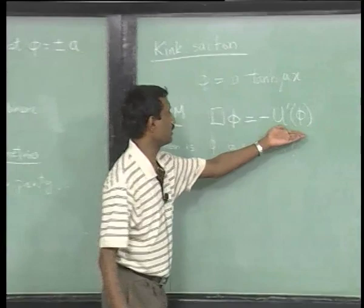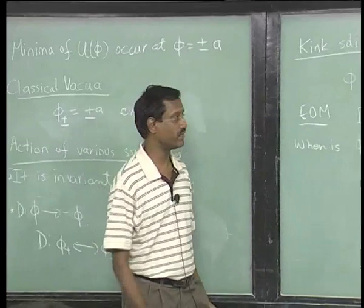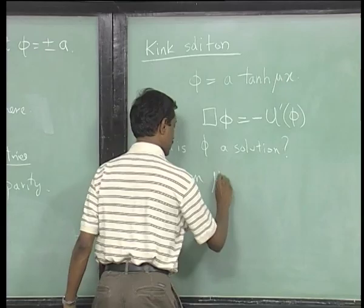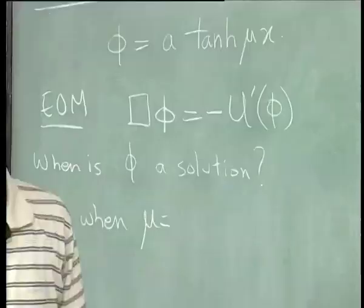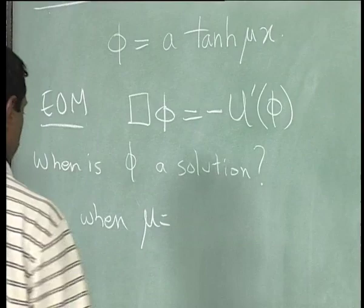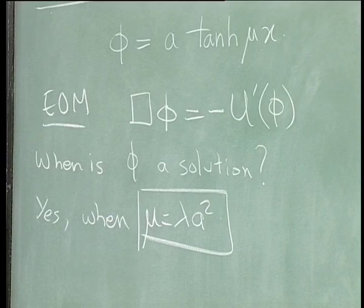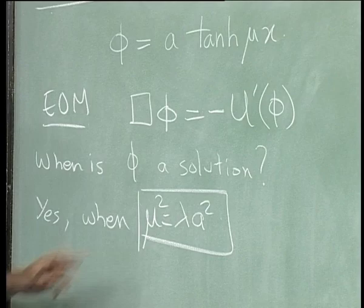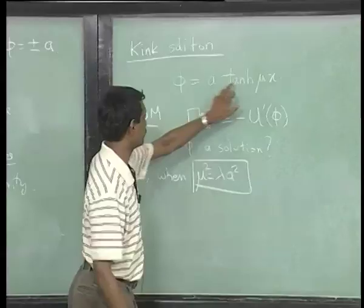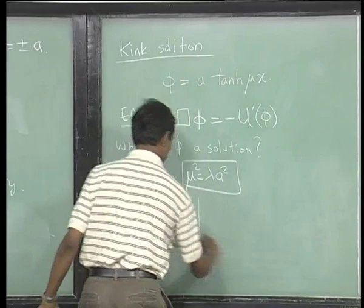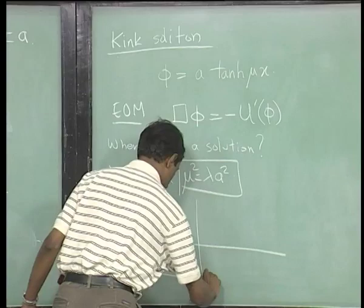Because this is a nonlinear function, for arbitrary values of μ we will not get a solution, but we find that the answer is yes when μ² = λa². The kink solution takes care of the following interpolation: at x going to minus infinity, it goes to minus a.